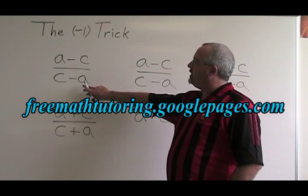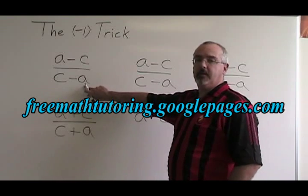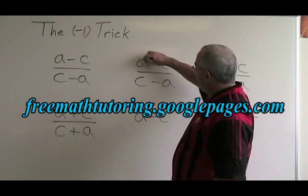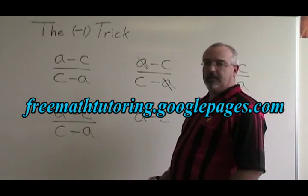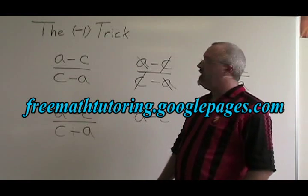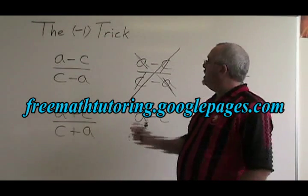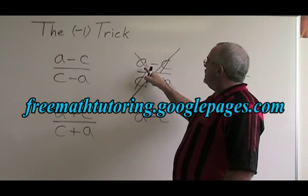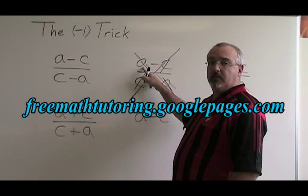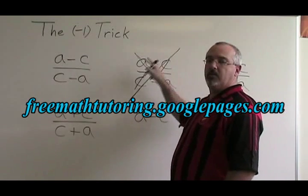When we have an algebraic fraction like a minus c over c minus a, sometimes we're tempted to cancel — to say, oh, there's an a on the top and an a on the bottom, I can cancel them; there's a c on the top and a c on the bottom, I can cancel them. This is not allowed, because the a on the top of this fraction is part of a binomial. You can't cancel just a part of the binomial — you have to be able to cancel the entire binomial.